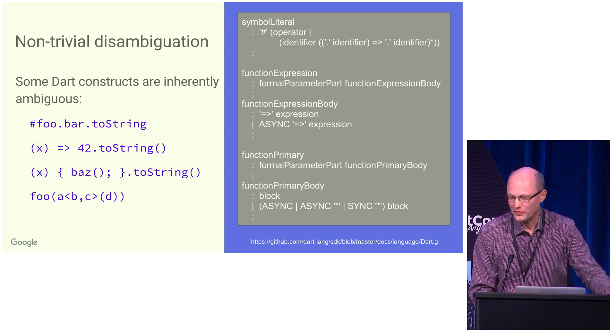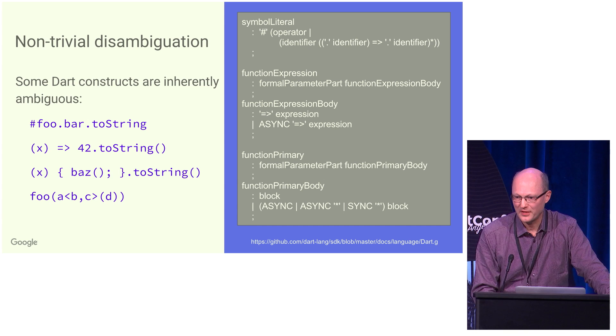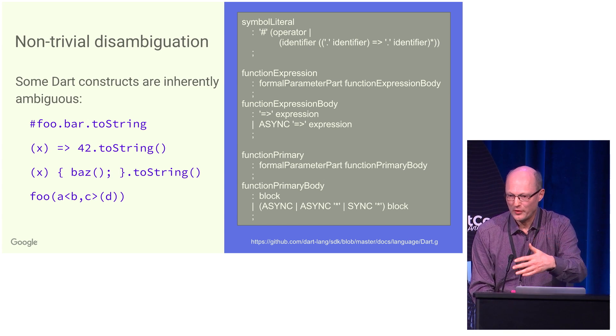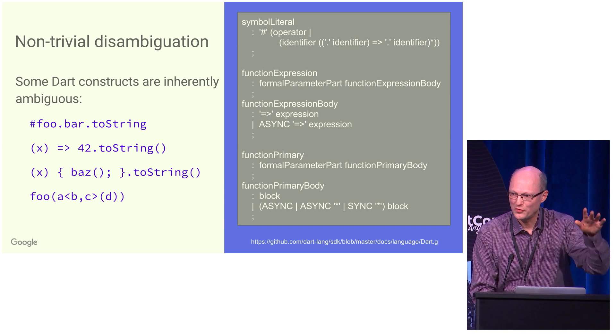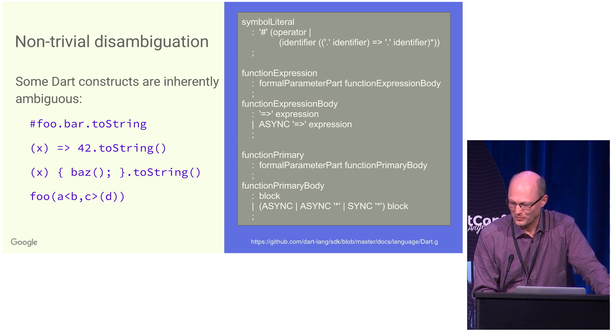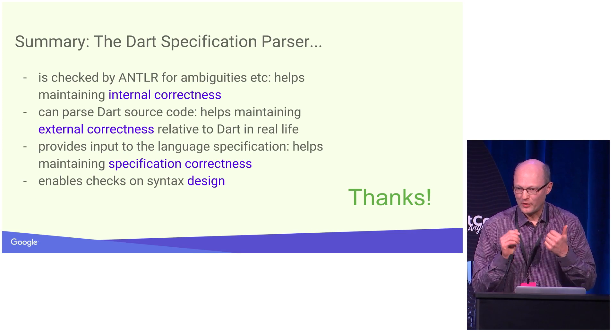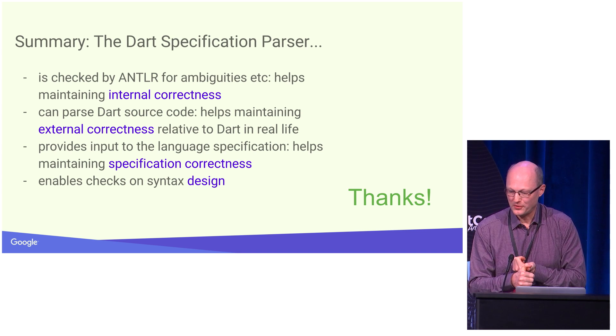And finally, we have the example down below where you have something that is an invocation of a generic method, but it also parses as two arguments of type bool.